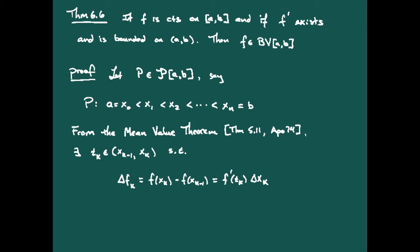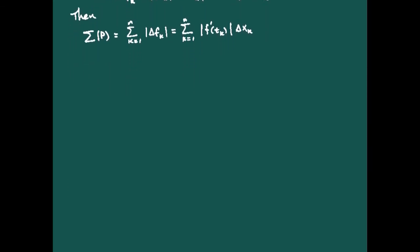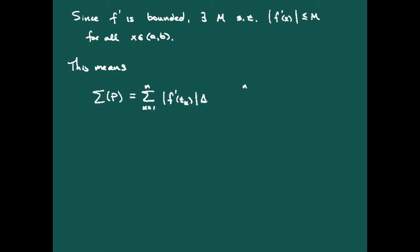Looking at the variation of the function with respect to partition p, σ(p), we replace the absolute value of Δf_k with the absolute value of f′(t_k) times Δx_k. From there, we use the fact that the derivative is bounded: there exists some M for which |f′| ≤ M on the entire open interval (a, b). So we bound our variation with respect to p by M times the sum of the Δx_k's, which is a telescoping sum giving us M(b − a).